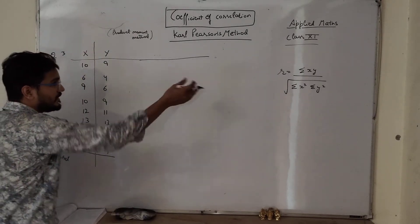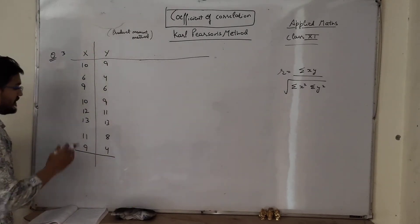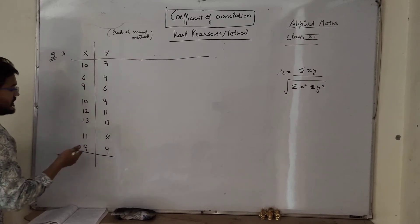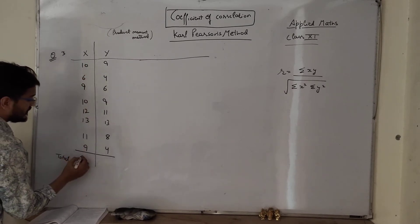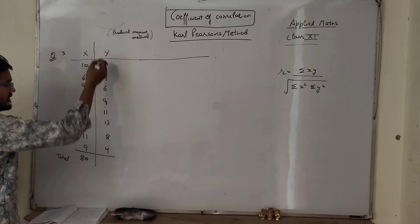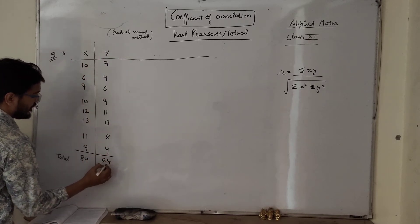So now we have to determine the value of small x. Before that we should get the total of all these terms. So the total of all these terms is 80, the sum of all these terms is 64.